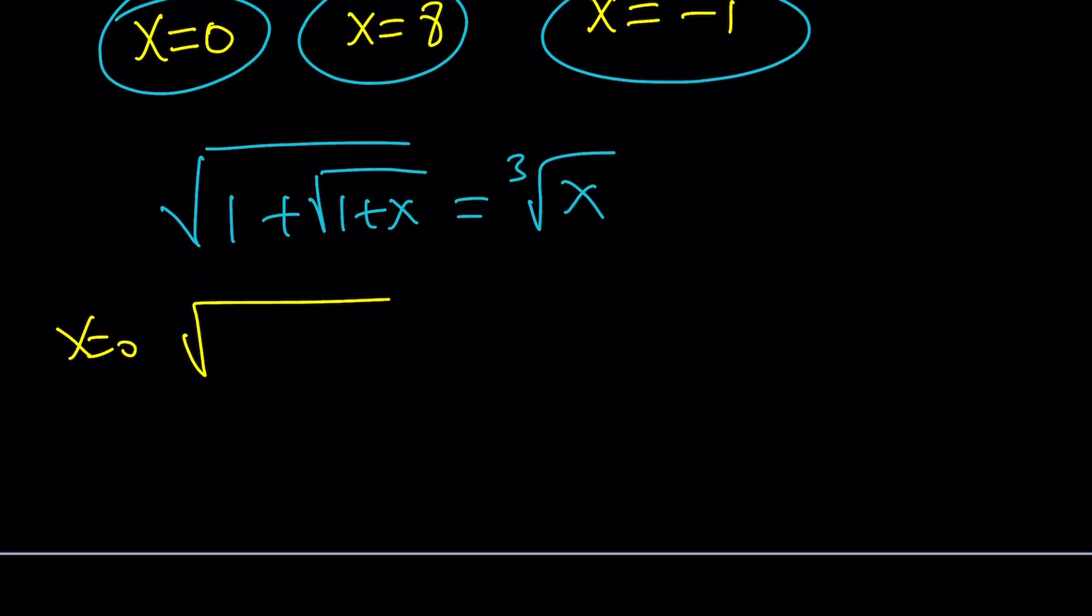On the left-hand side, we get square root of 1 plus the square root of 1 plus 0, which is 1. Square root of 1 is equal to 1, and this becomes square root of 2. But that's not equal to the cube root of 0. So x equals 0 is not going to work.